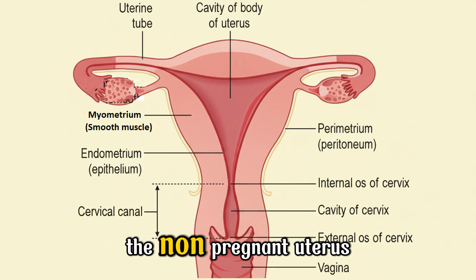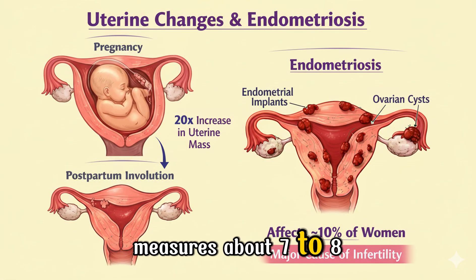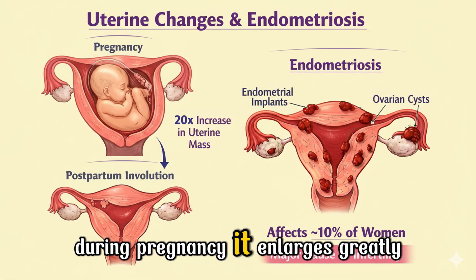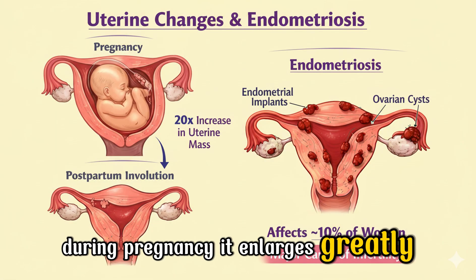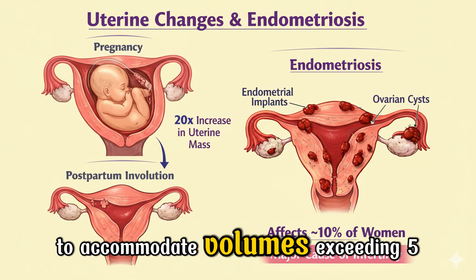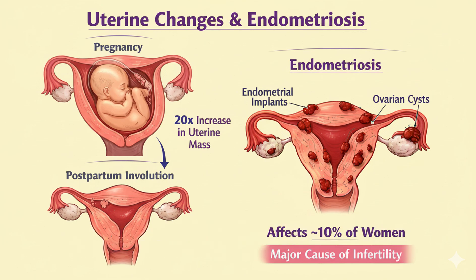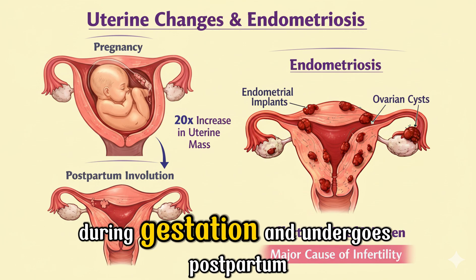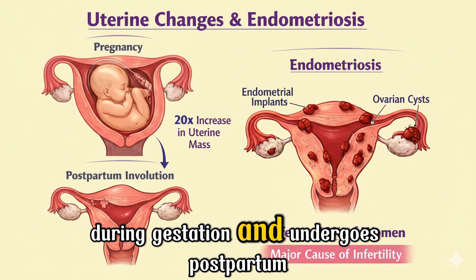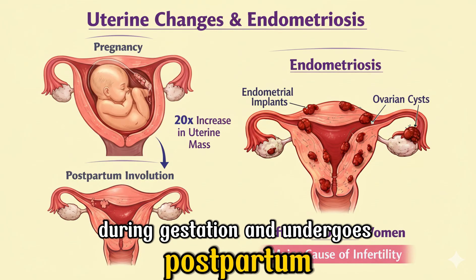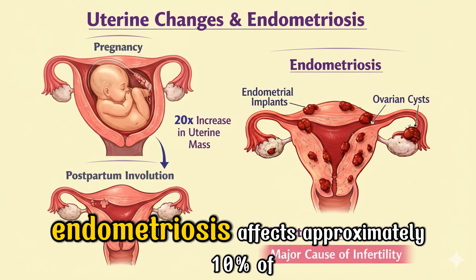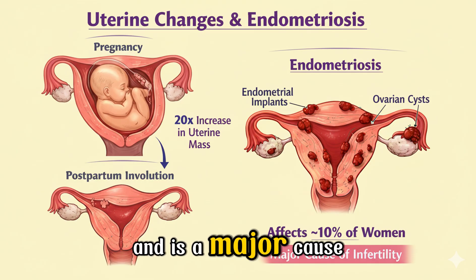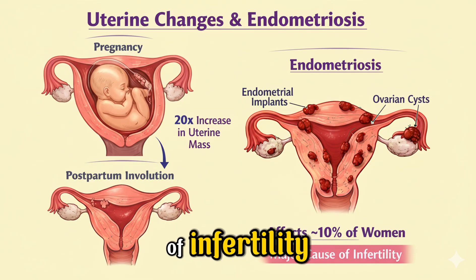The non-pregnant uterus measures about 7 to 8 centimeters in length. During pregnancy, it enlarges greatly to accommodate volumes exceeding 5 liters. Uterine mass increases nearly 20-fold during gestation and undergoes postpartum involution. Endometriosis affects approximately 10% of women and is a major cause of infertility.